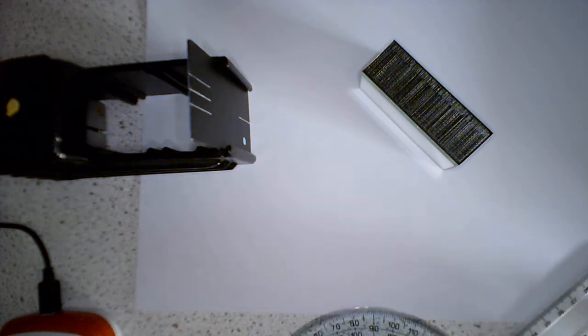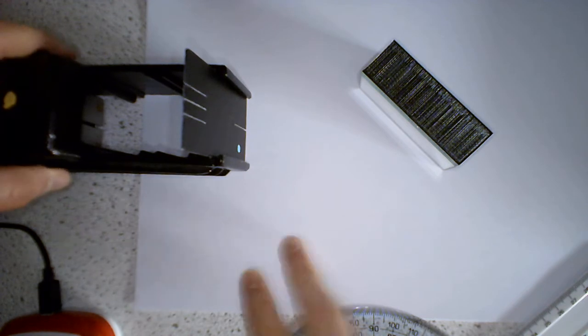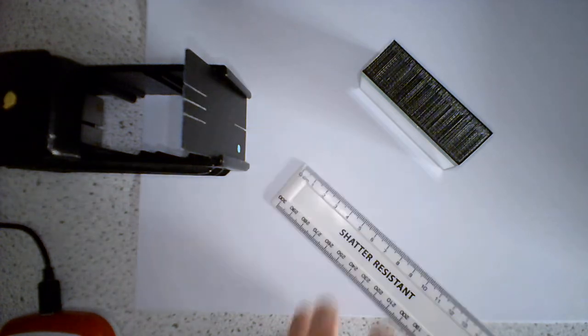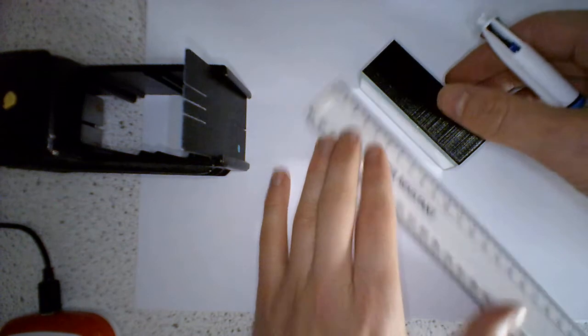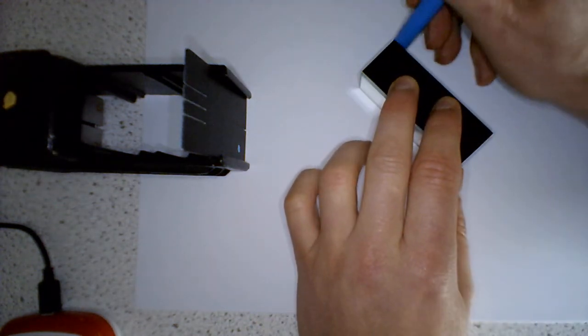So what we're going to look at is to see if we can find a law which reflection follows. That's our objective here. So whenever we do anything with optics, we're going to be drawing what we call normals. So first thing I'm actually going to do is I'm going to draw around my mirror so I can mark its position.